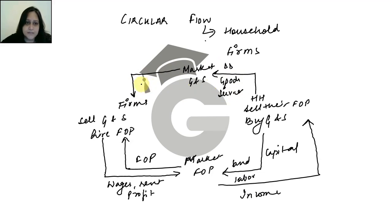So, that demand becomes revenue for the firm. In return, the firm provides goods and services. And those goods and services travel to this market and come to the household.